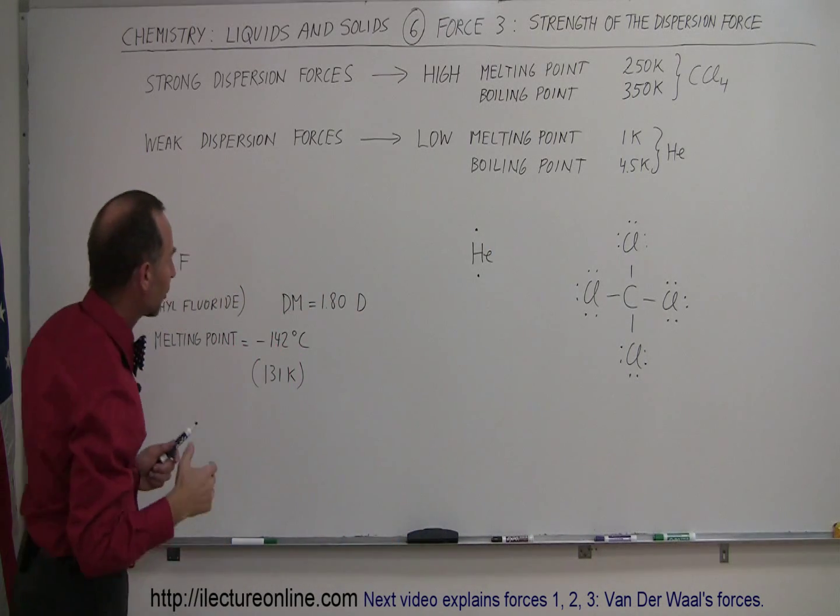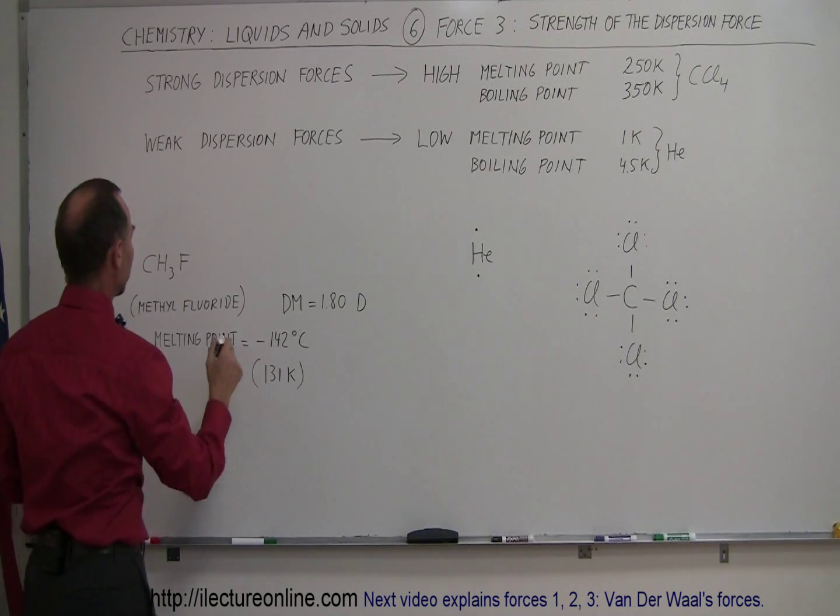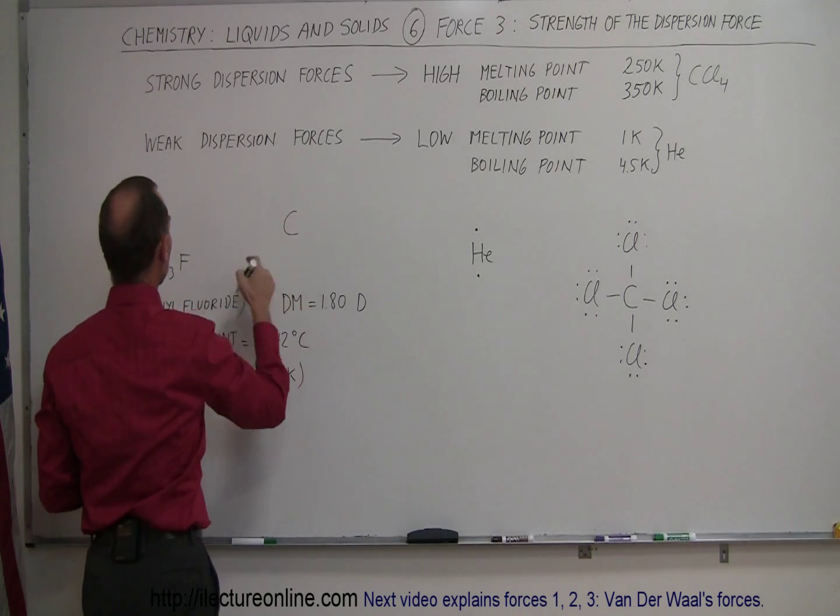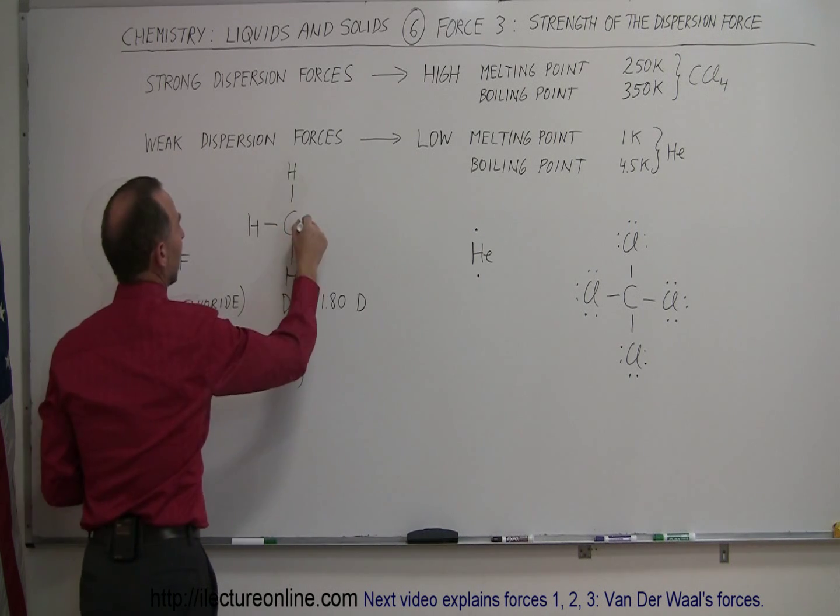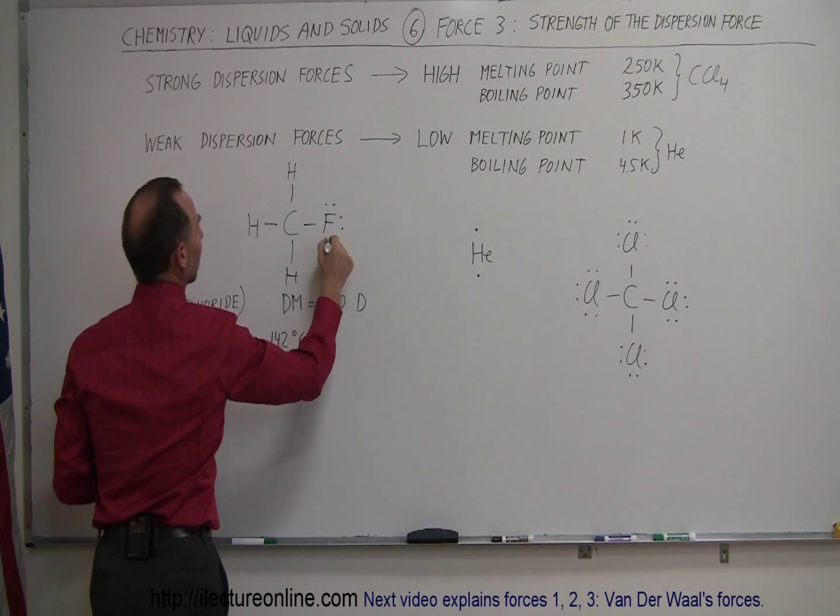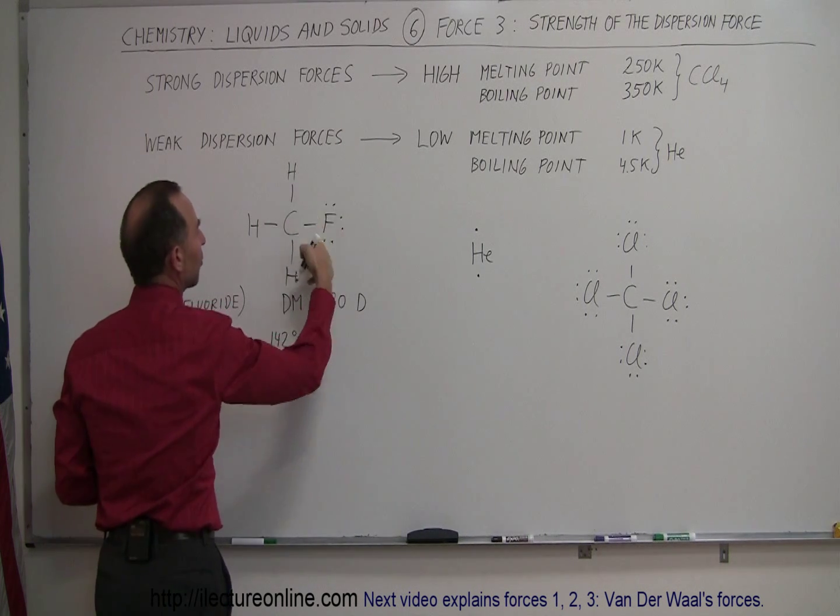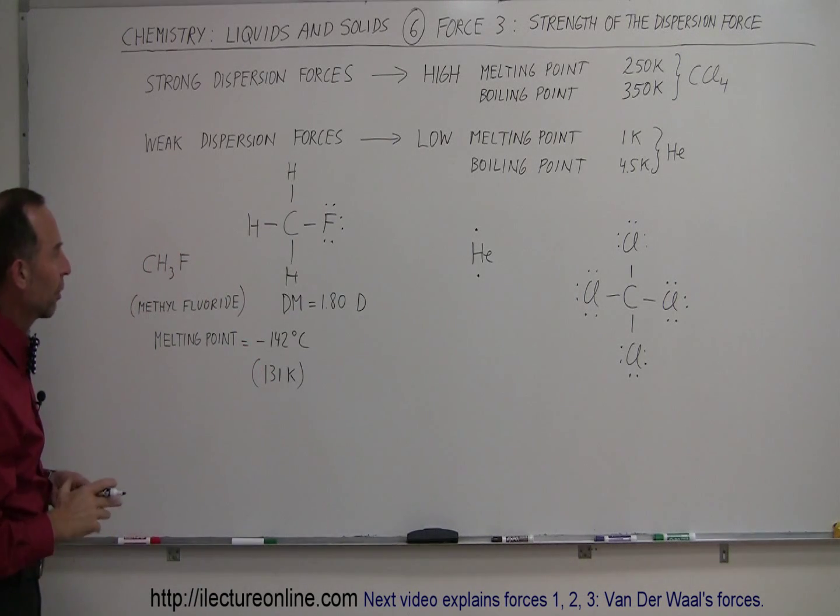And just to give you a comparison, let's look at methyl fluoride. We have a carbon in the middle, three hydrogens bonded like this, and one bond with a fluorine atom. Fluorine has seven valence electrons, one being used in the bond, leaving six electrons in three unused electron pairs.